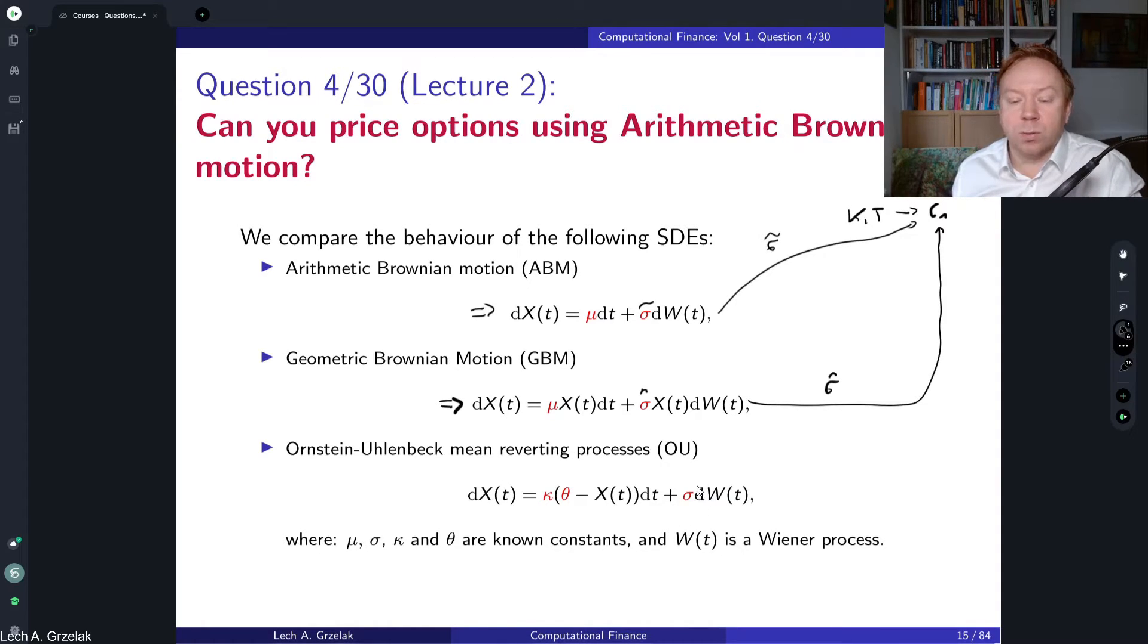Similar approach you can do also for the OU process where we have this volatility parameter sigma. So let's say we fix some drift parameters here and we could say we would price options with OU process. But then it's another issue: is this actually a process that we can use for pricing of options? And of course it is not the case.